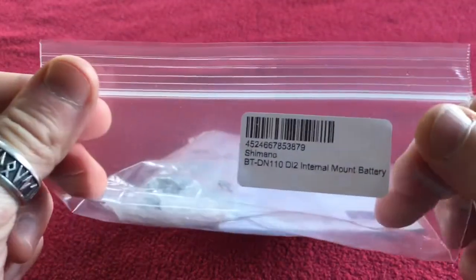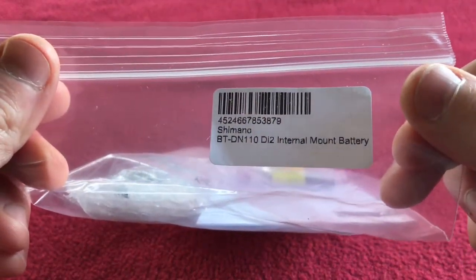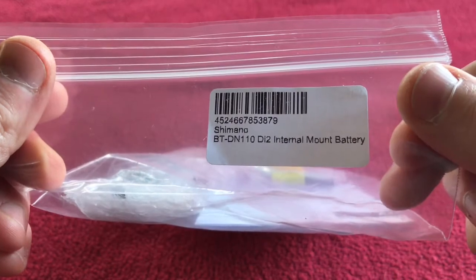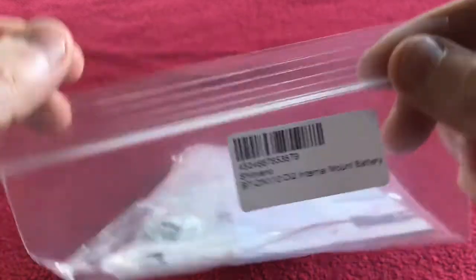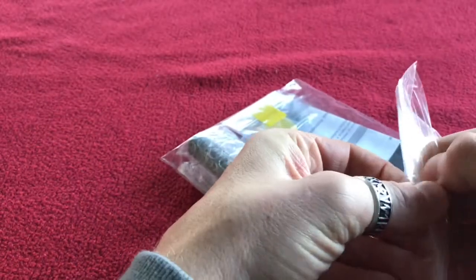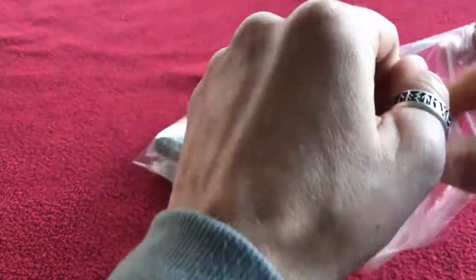Today we are looking at this package, and in this package is the Shimano BT-DN110 DI2 internal mount battery. I'm going to put this in my seat post, hopefully with my new bike.